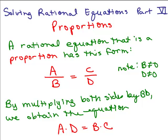This is part 7 of solving rational equations, and we're just working on proportions. Remember a rational equation that is a proportion has the form A over B equals C over D. So what you have is one fraction equaling another fraction, and the denominators cannot be 0.